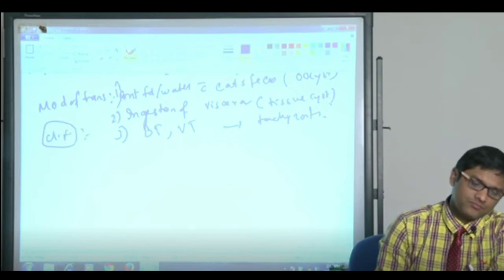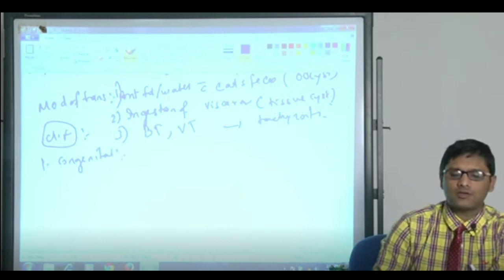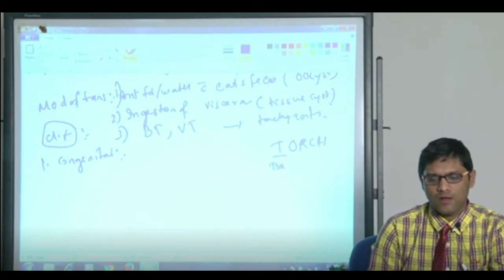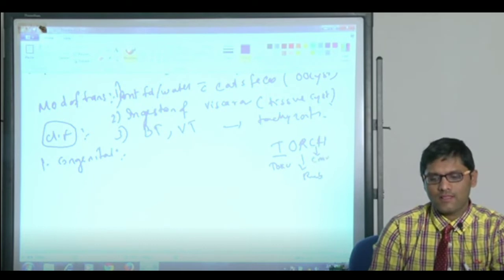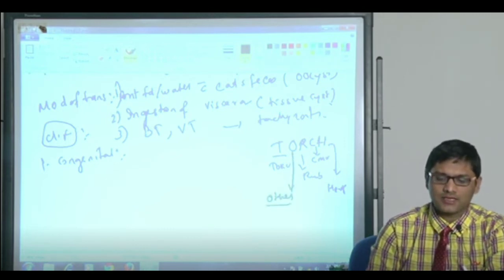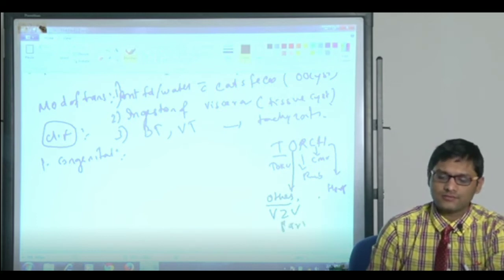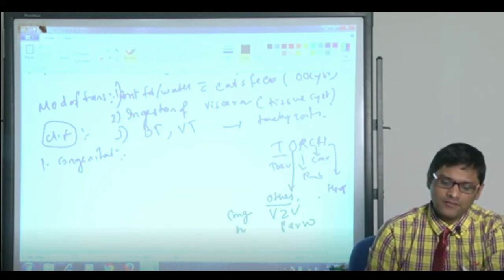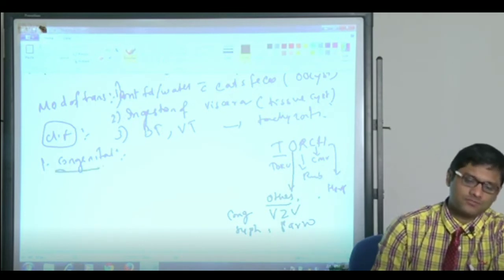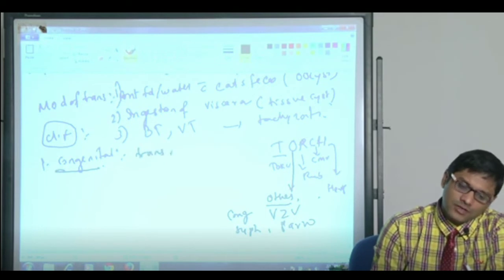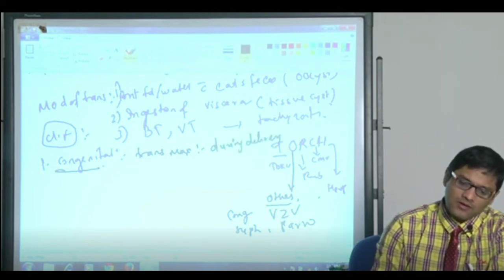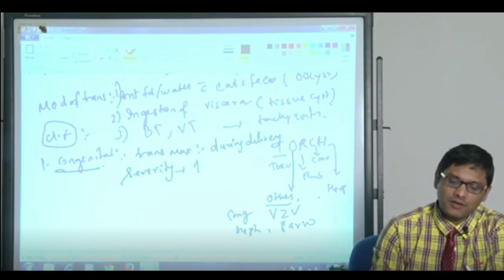Regarding the clinical manifestation, congenital toxoplasma is one of the TORCH agents. What is TORCH? T for toxo, O for others like STD, syphilis, varicella zoster virus, parvovirus, and congenital syphilis, R for rubella, C for cytomegalovirus, H for herpes. Coming to congenital toxoplasmosis, transmission is maximum during delivery, whereas severity is maximum in first trimester.